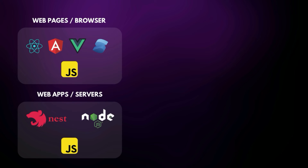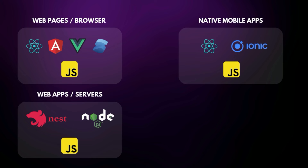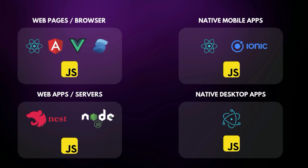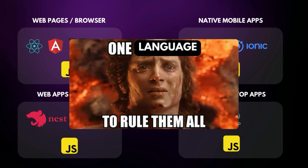You also have frameworks like Nest.js, which can allow you to build very complex and scalable servers using a structured and well-defined architecture for your applications using JavaScript. So by knowing JavaScript, you already have the base to build a front-end and back-end application. You can go even beyond and build mobile applications using frameworks like React Native or Ionic that can turn your JavaScript code into native mobile code, making it possible to also build your mobile apps using JavaScript.